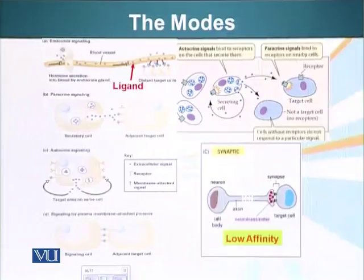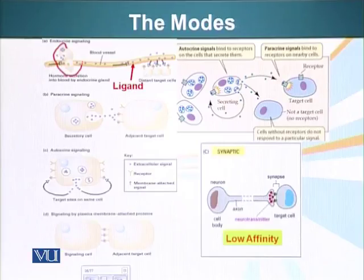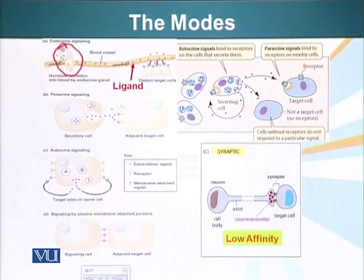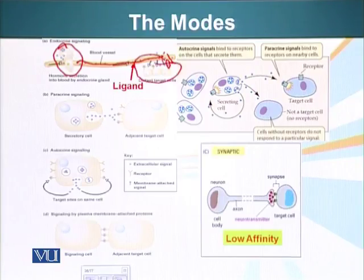Let's look at the modes. First, there's endocrine signaling, in which a particular cell or group of cells produces the signaling molecule or ligand. It is sent into the bloodstream and transported from one part of the body to another, ultimately reaching different target cells which read the signal and respond accordingly.